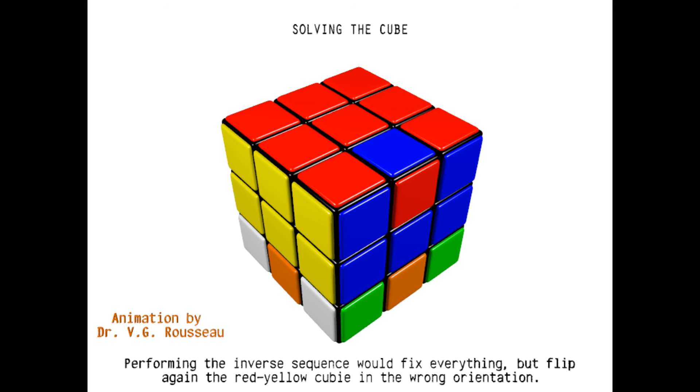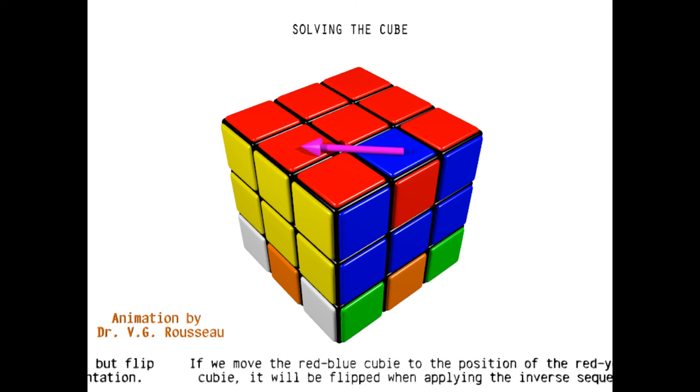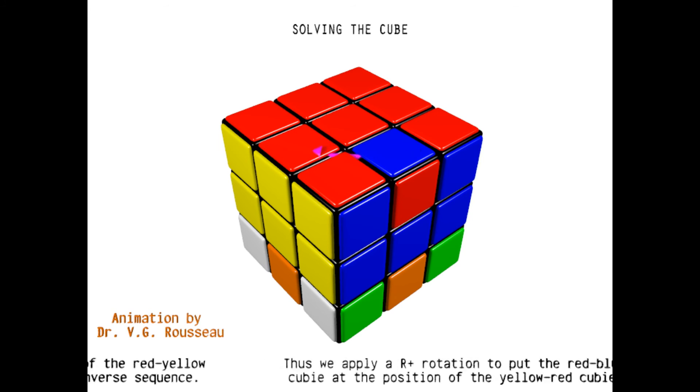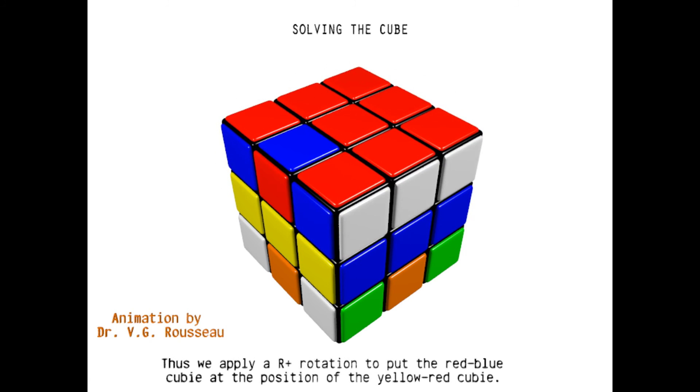So all we have to do is to move the red-blue cubie to the position of the red-yellow cubie by doing a red positive rotation. And now, if we apply the inverse of the previous sequence, all the cubies that were messed up will be restored and the red-blue cubie will be flipped. And then, we will only have to put the red-blue cubie back to its initial position by doing a red negative rotation. Let's do it.